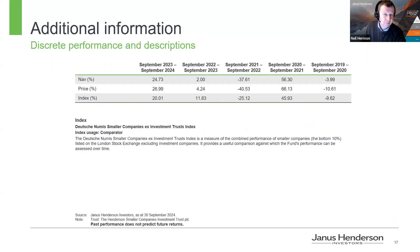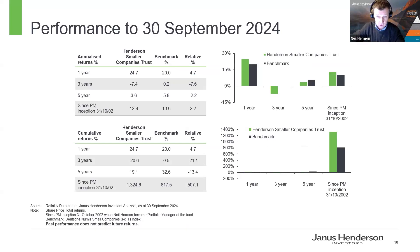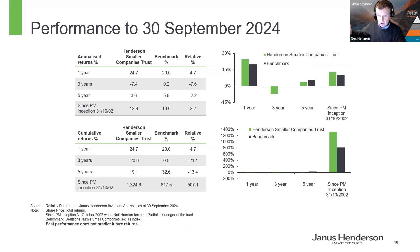Looking at performance of the trust over a variety of time periods: the long-term track record — going back to since I joined in October 2002 — returns of 13% compound per year over that 22-year period, beating the benchmark by an average of 2.2% per year. It's a good long-term track record. The more medium-term track record of three and five years is clearly more challenged — really impacted by what was happening in 2022 and 2023.